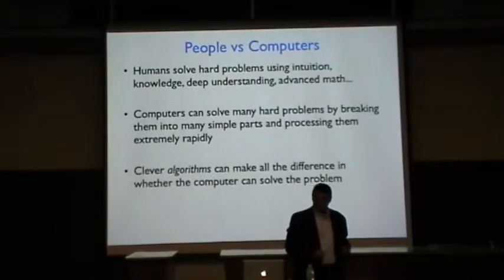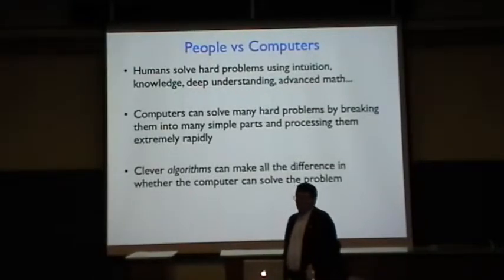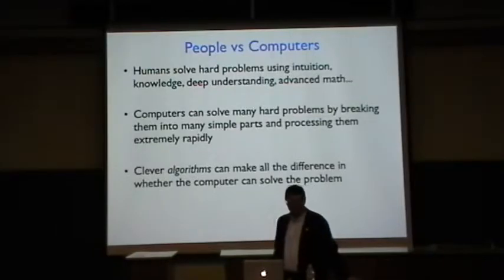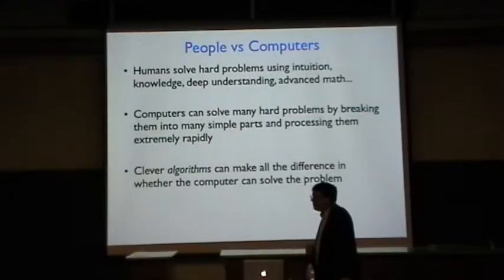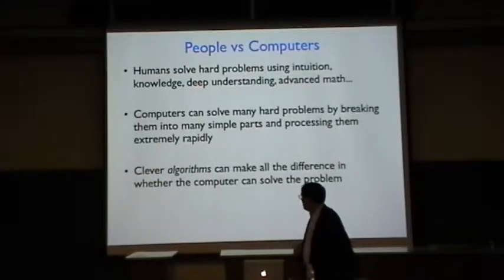And that was the key element that allowed Deep Blue to beat Kasparov. Another aspect which you don't hear about as often is that there were some very clever algorithms involved in this. As you look at all of these positions, they form a tree. There are very clever methods for trimming off branches of that tree so that you don't have to evaluate so many different positions. You can go deeper into the tree. That was an important part of this win for Deep Blue.